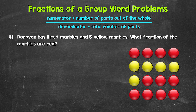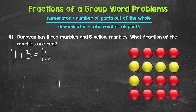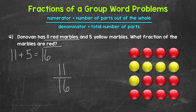But we can figure it out with the information given. He has 11 red marbles and five yellow marbles, so let's add those to find the total. 11 plus five gives us 16, so Donovan has 16 marbles in total — that's our denominator. Now we need the numerator. We're looking for the fraction of marbles that are red. Donovan has 11 red marbles, so 11 is the numerator. 11 out of 16 total marbles are red — our fraction is 11 sixteenths.